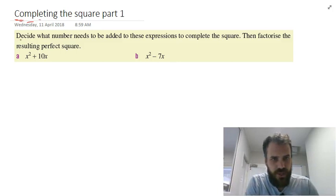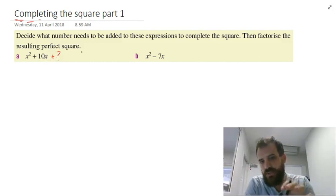So decide what number needs to be added to these expressions to complete the square, then factorize the resulting perfect square. So x squared plus 10x plus question mark. We need to add something to this to turn it into a perfect square.